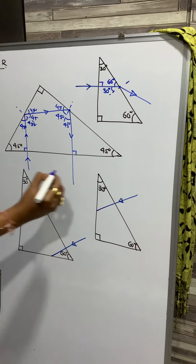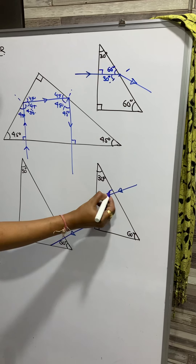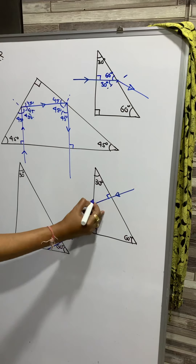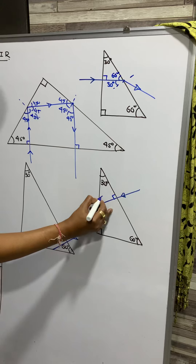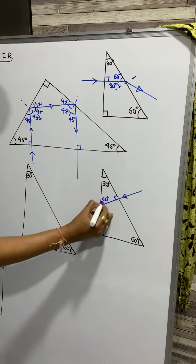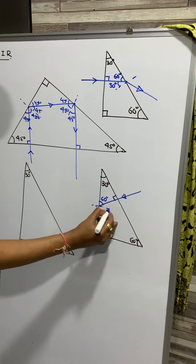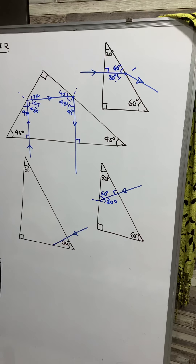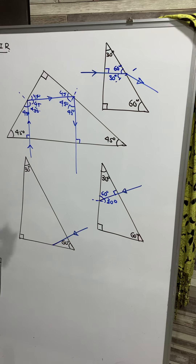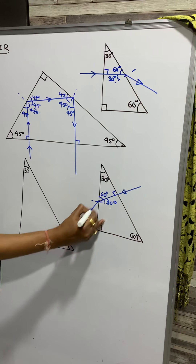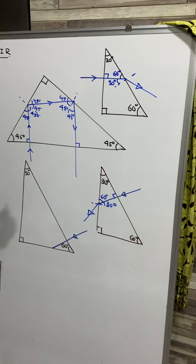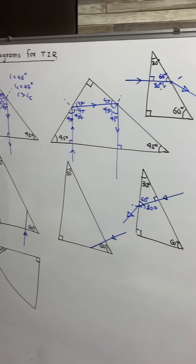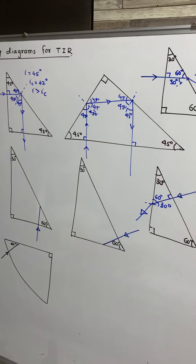Here also, this is your angle of incidence — this is 90 degrees. This angle is 60 degrees. I will draw the normal here. This is 30 degrees, which is less than the critical angle, so it will refract like this. This is the 30-60-90 prism.